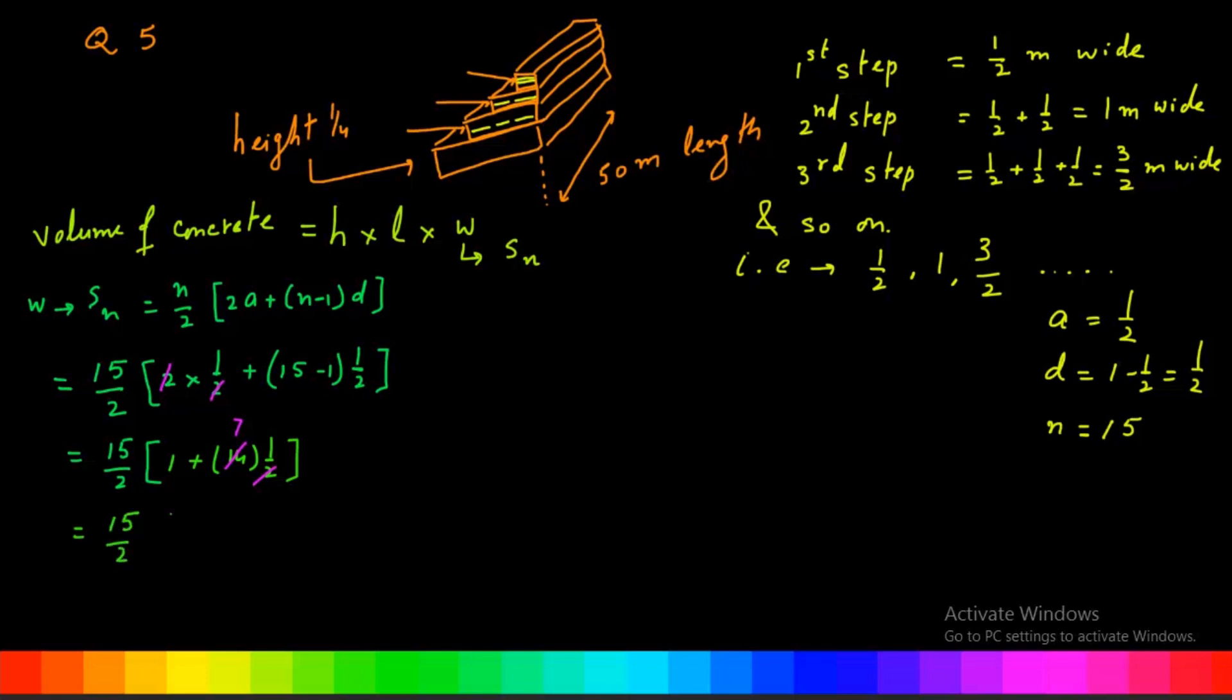So 15/2 multiplied by 1 plus 7, or 8. 2 cuts 8 by 4, so 15 multiplied by 4 is equal to 60.